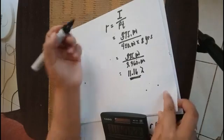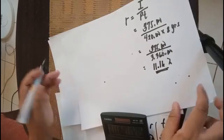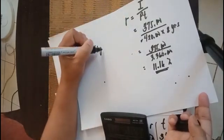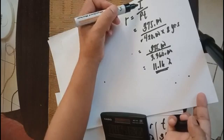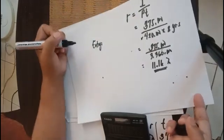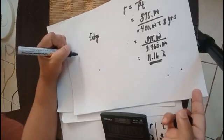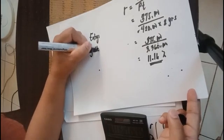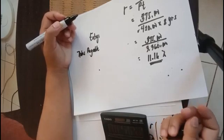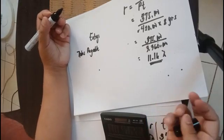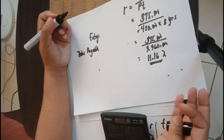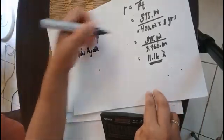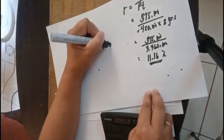Now for the journal entry. The principal is four hundred twenty thousand and the interest is three hundred seventy-five thousand. The debit entry is either accounts payable or notes payable. We use accounts payable when there is no document signed by the borrower, but if there is a document, we use notes payable instead. That is the difference between the two.